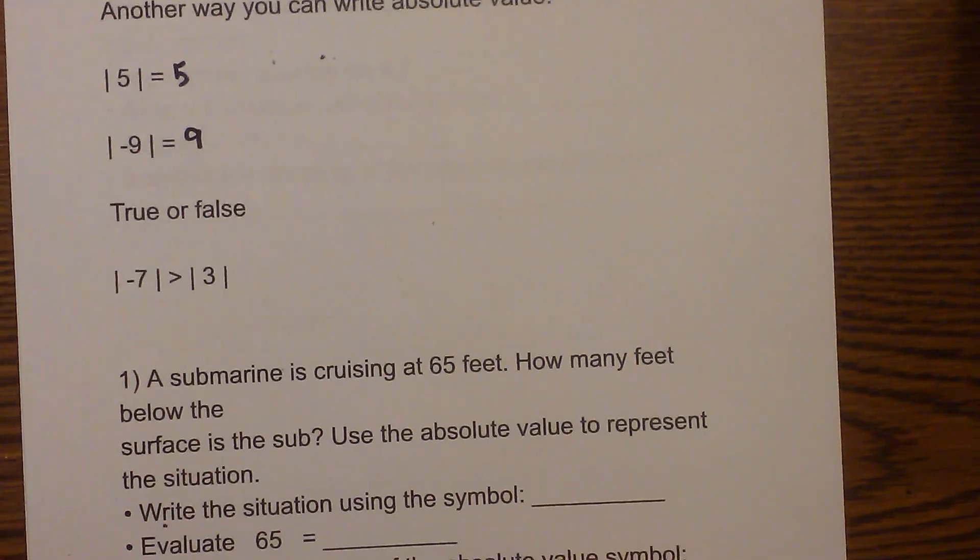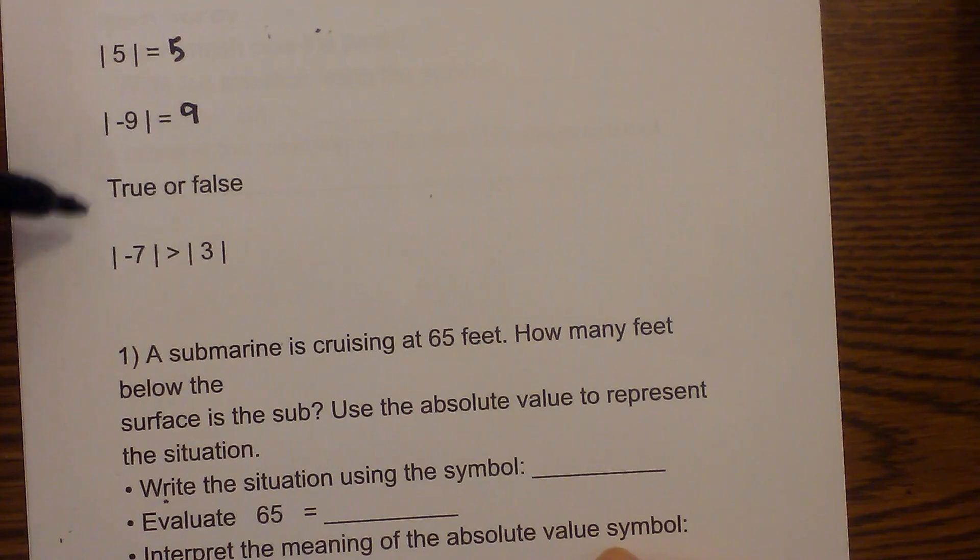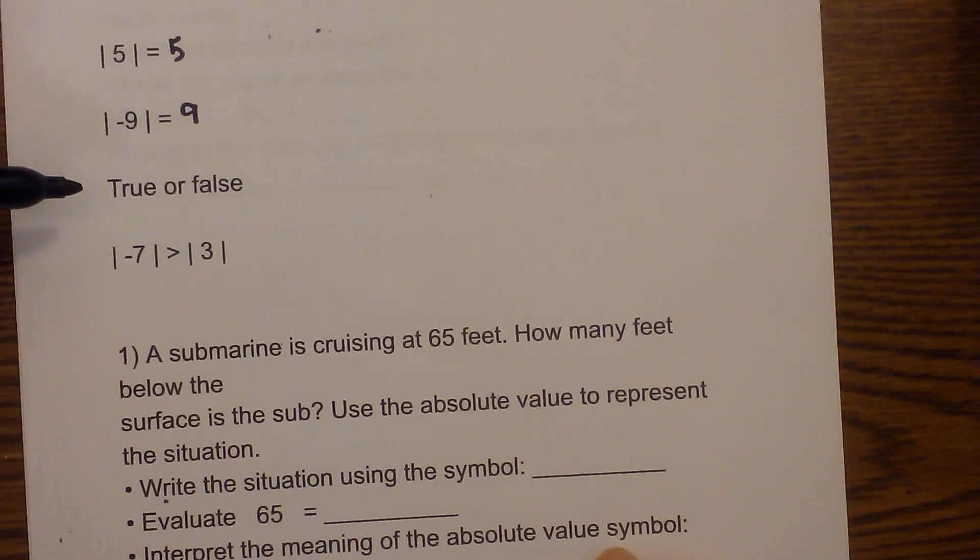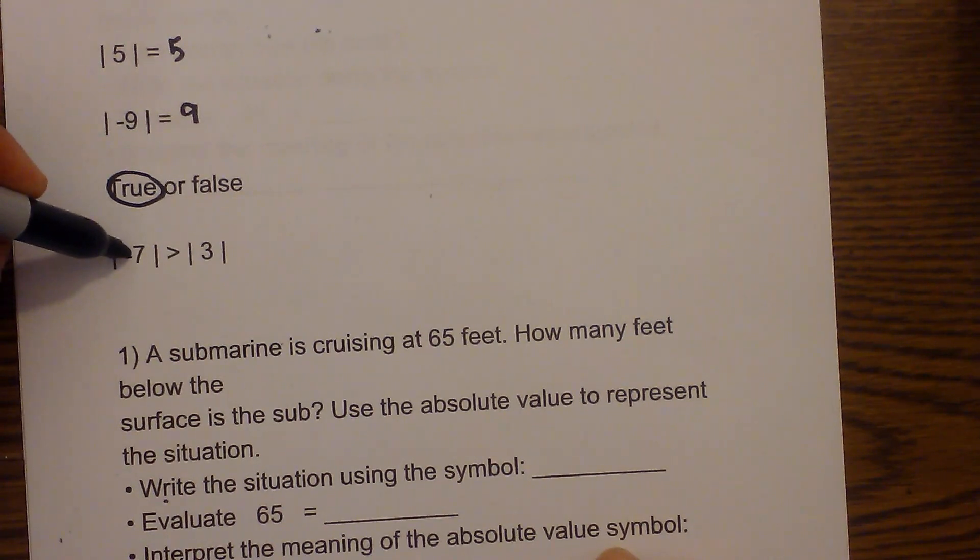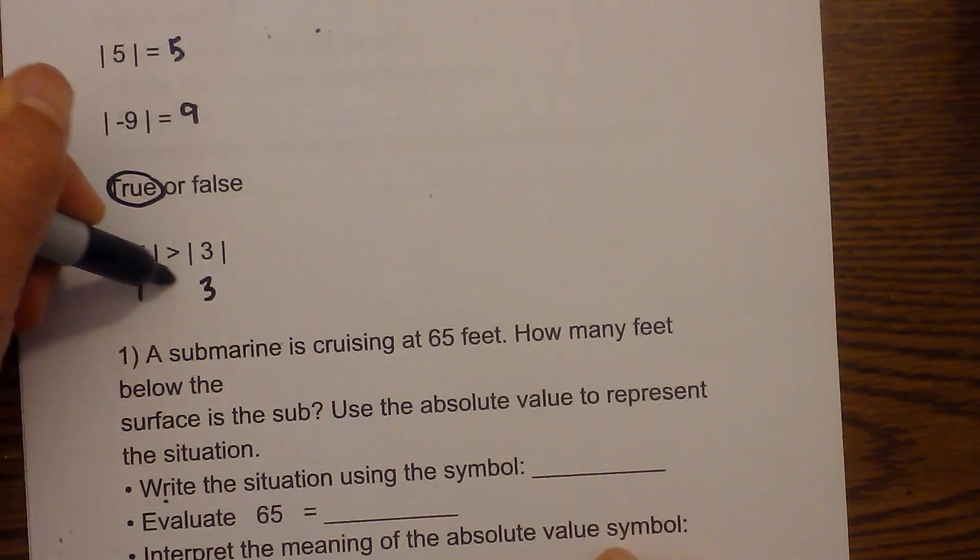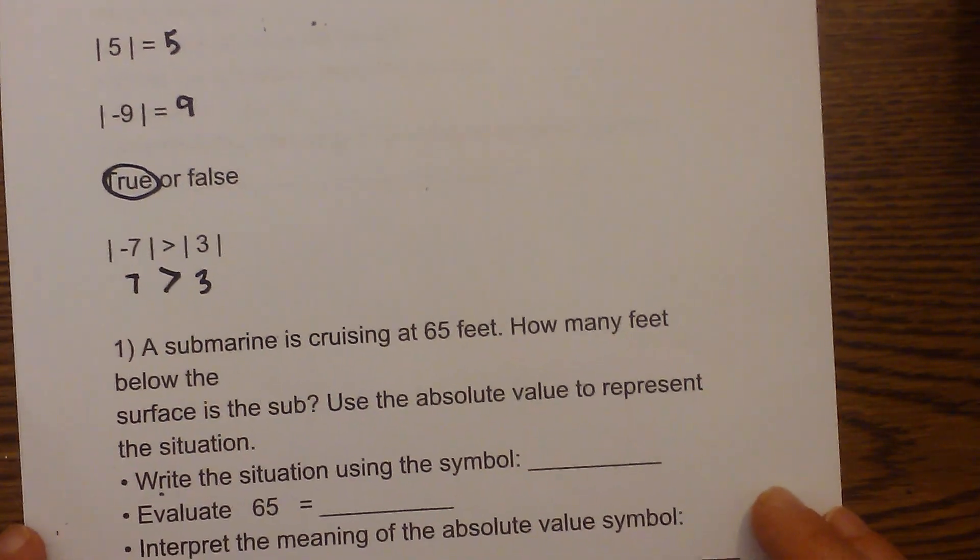Now let's apply what we've learned so far with this true-false question. You have |-7| > |3|. So is that true or false? It is true because remember the absolute value of negative 7 is 7. Absolute value of 3 is 3. And 7 is greater than 3.